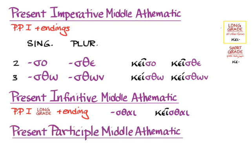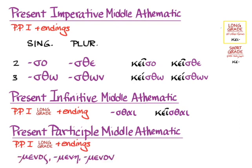And for the present participle, we'll use the long grade again, and we'll put on the μενος, μένη, μενον endings that are so familiar from middle participles. We'll get κείμενος, κειμένη, κείμενον, which of course you decline the way we decline καλός, καλή, καλόν.